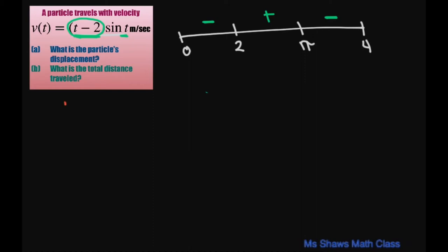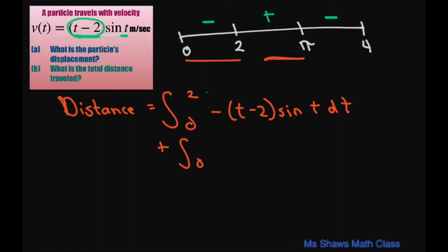The distance equals, now we're going to go from 0 to 2, and we're going to write this as negative t minus 2 sine of t dt. Then we're going to do this one. So that's going to be plus the integral of 2 to pi, and that's going to be t minus 2 sine of t dt.